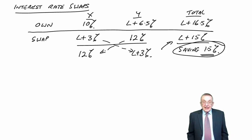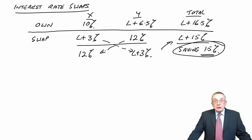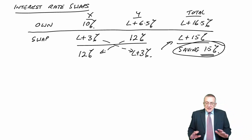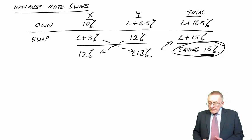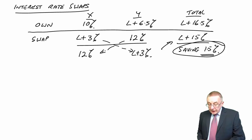Now, all right, they have saved, but of course, there is no way on earth that X would allow it to stay like that, because X could have borrowed themselves at 10. And if we stop there, they're ending up paying 12%. And Y is making a huge saving, obviously. If we stop there, they're paying LIBOR plus 3% instead of LIBOR plus 6.5%. And so, all we have to do is settle up between them.